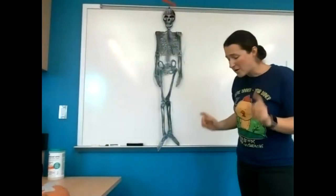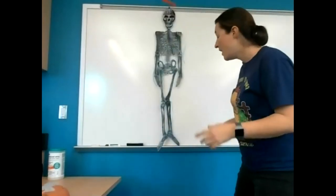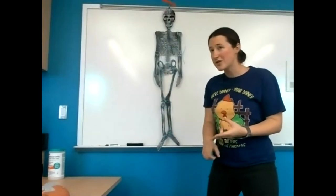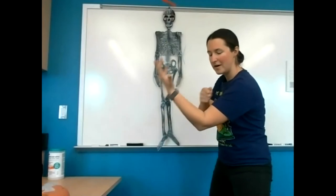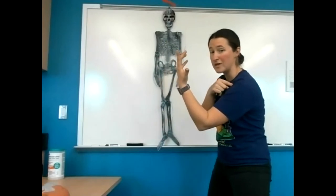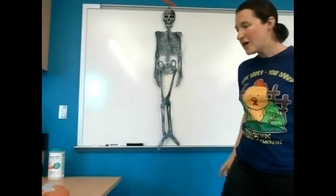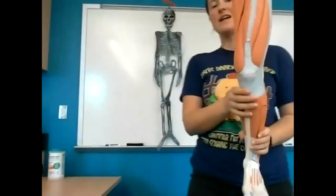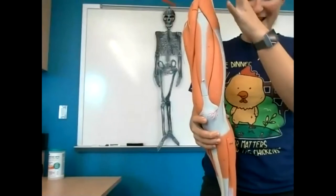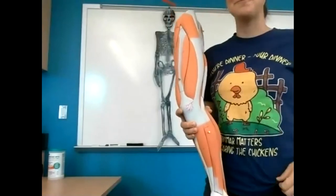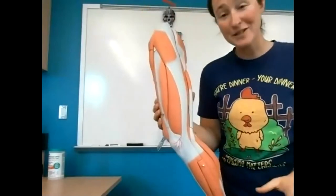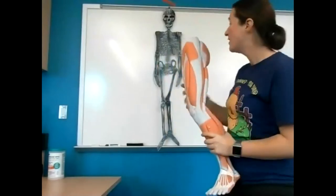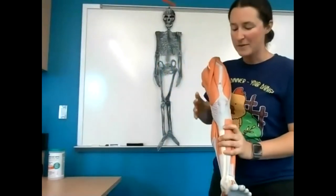On exam number two, I will give you an origin and an insertion, and you should be able to determine the action — the entire limb is pulled up towards the origin. Today when we look at the chicken leg, which does look a little different, the same concepts are in play, just like I showed you on Mr. Bones over here.